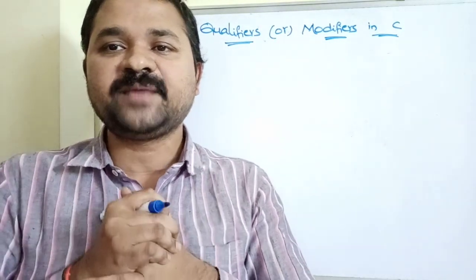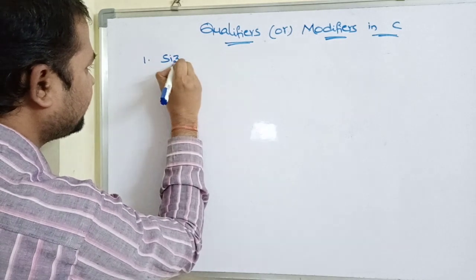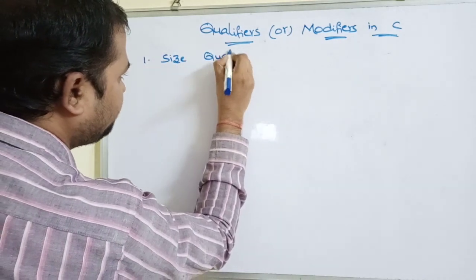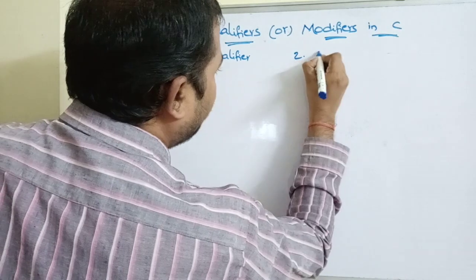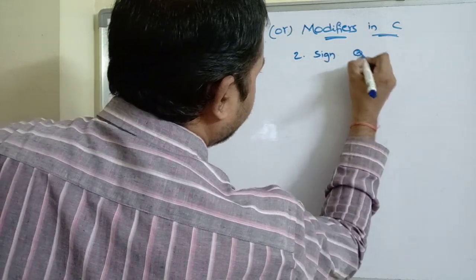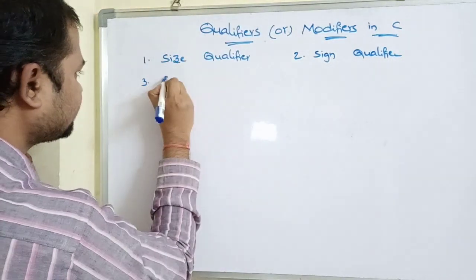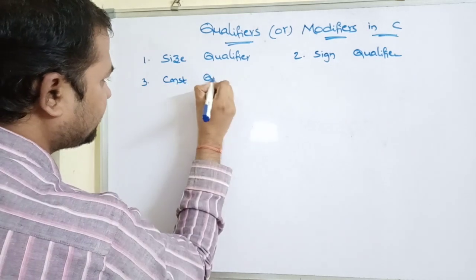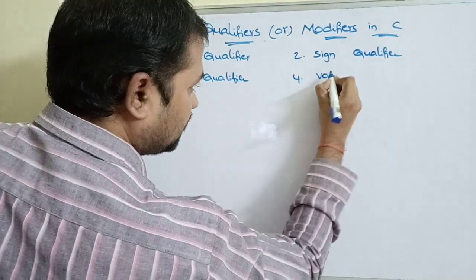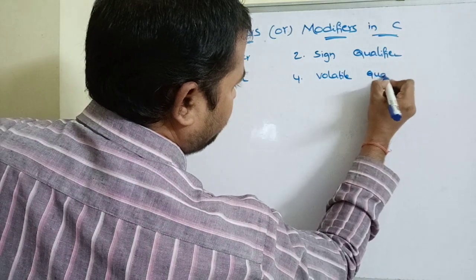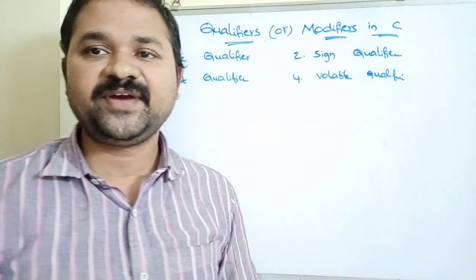There are four types of qualifiers available. The first qualifier is the size qualifier. The second qualifier is the sign qualifier. The third one is the const qualifier. The fourth one is the volatile qualifier.